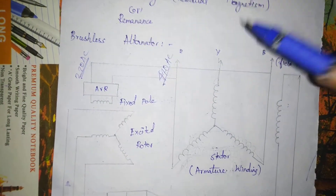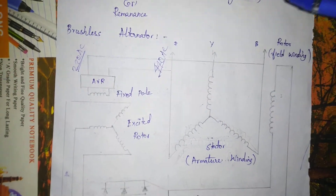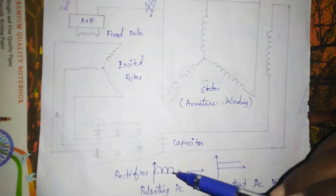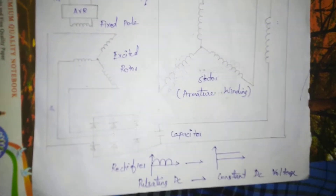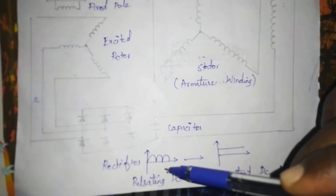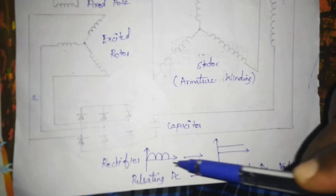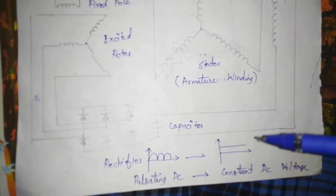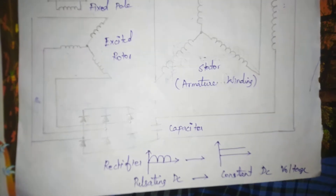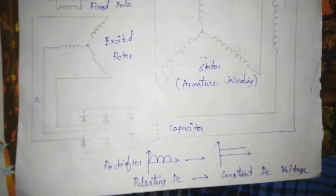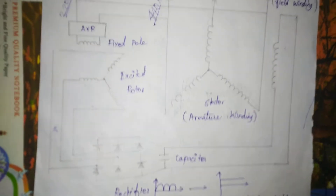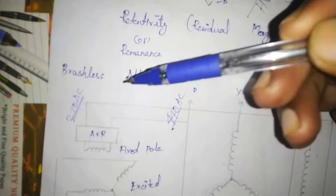The AC must be converted to DC — we have to rectify it. We need to use DC, and the DC must be constant DC. We have to use filter circuits with capacitors to produce constant DC.